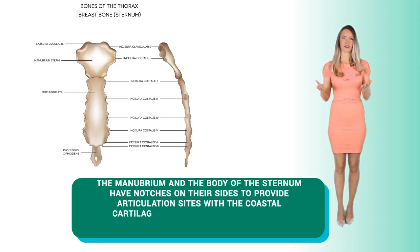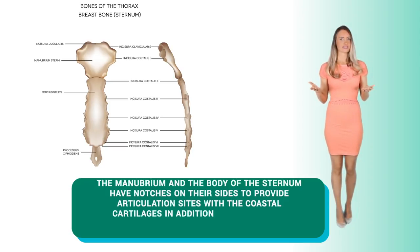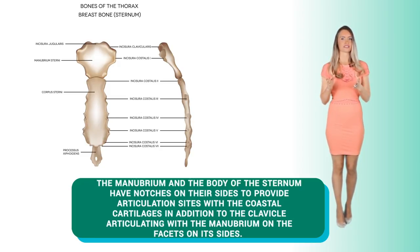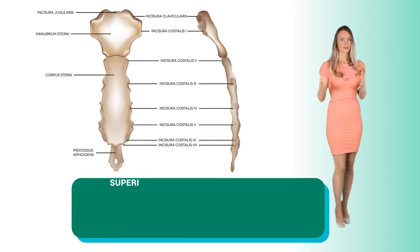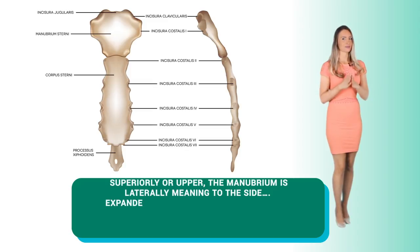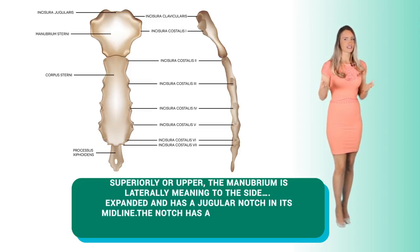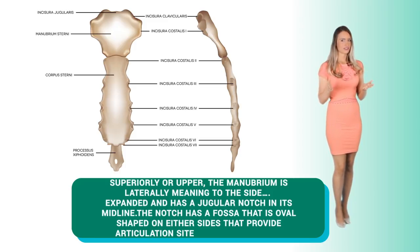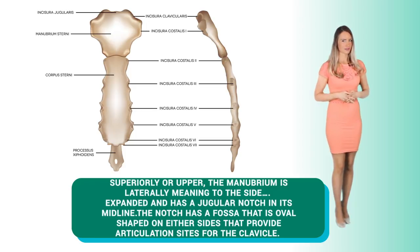The manubrium and the body of the sternum have notches on their sides to provide articulation sites with the costal cartilages, in addition to the clavicle articulating with the manubrium on the facets on the sides. Superiorly, the upper manubrium is laterally expanded and has a jugular notch in its midline. The notch has an oval-shaped fossa on either side that provides articulation sites for the clavicle.